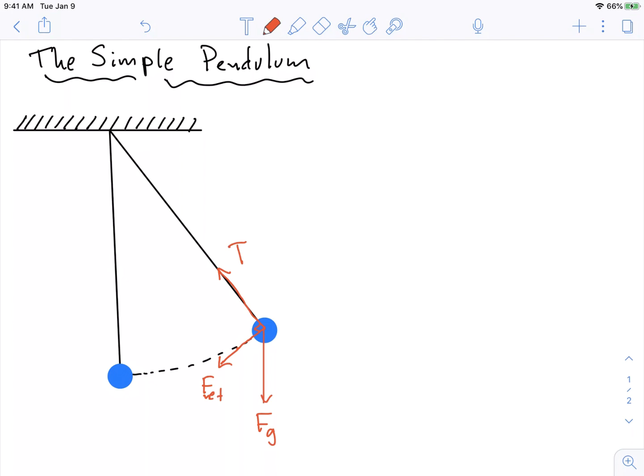And what this observation allows us to do is realize that the contribution to F net must be just solely due to the force of gravity. That's the thing that's gonna make this thing go, that's gonna restore it and make it go back to the middle.